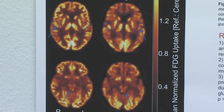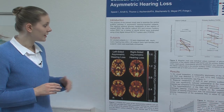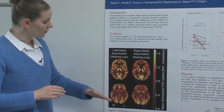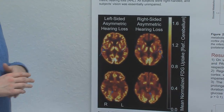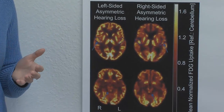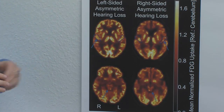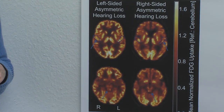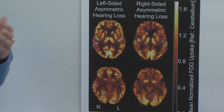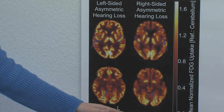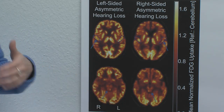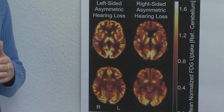We were especially interested in differences concerning ipsi and contralateral to the deaf ear. Here you can see an example of our PET imaging. Down here is the level of the brainstem, so the inferior colliculus, and up there the level of the cortex with the region of interest, the primary auditory cortex. Over here we have a subject with the deaf ear on the left-hand side and the better hearing ear on the right-hand side.